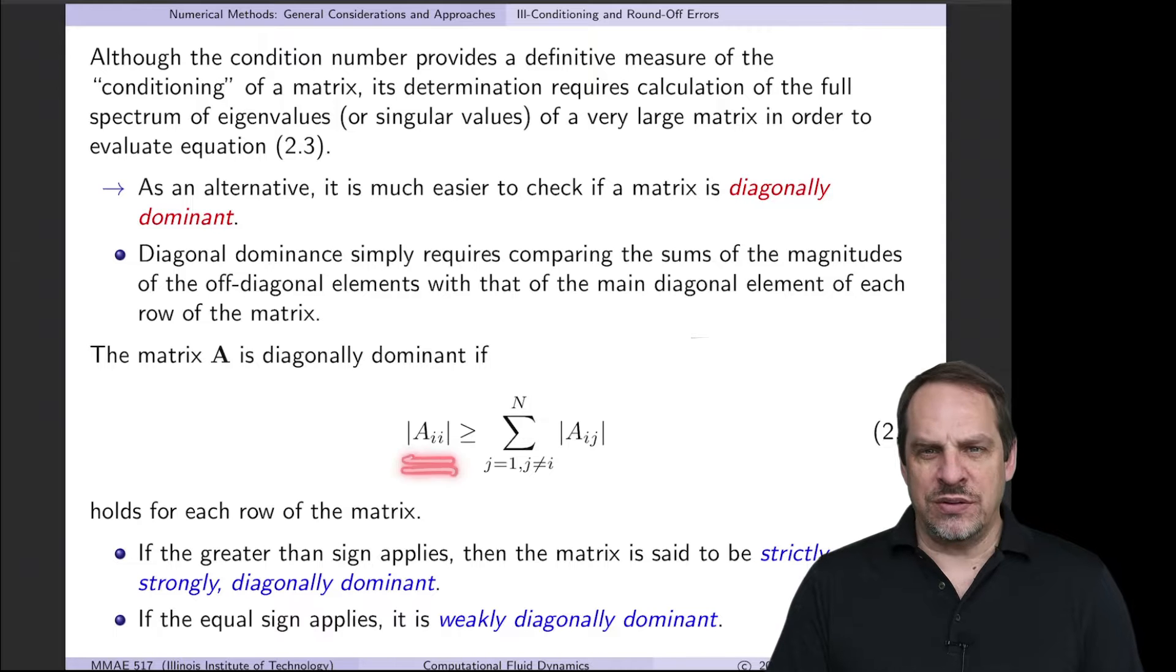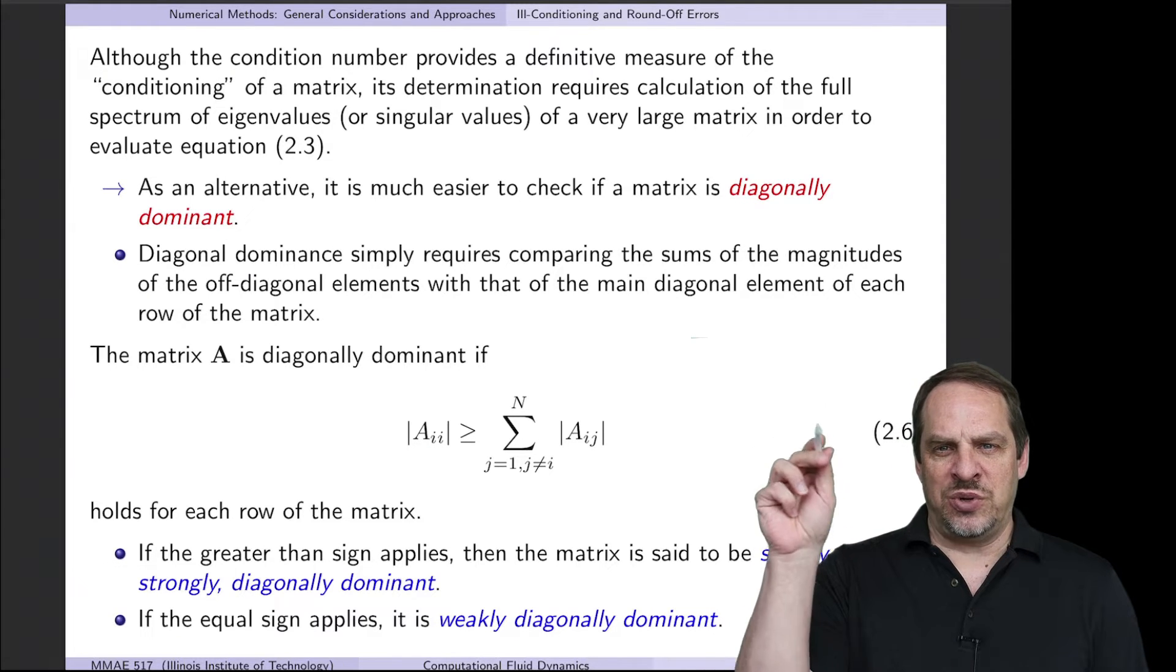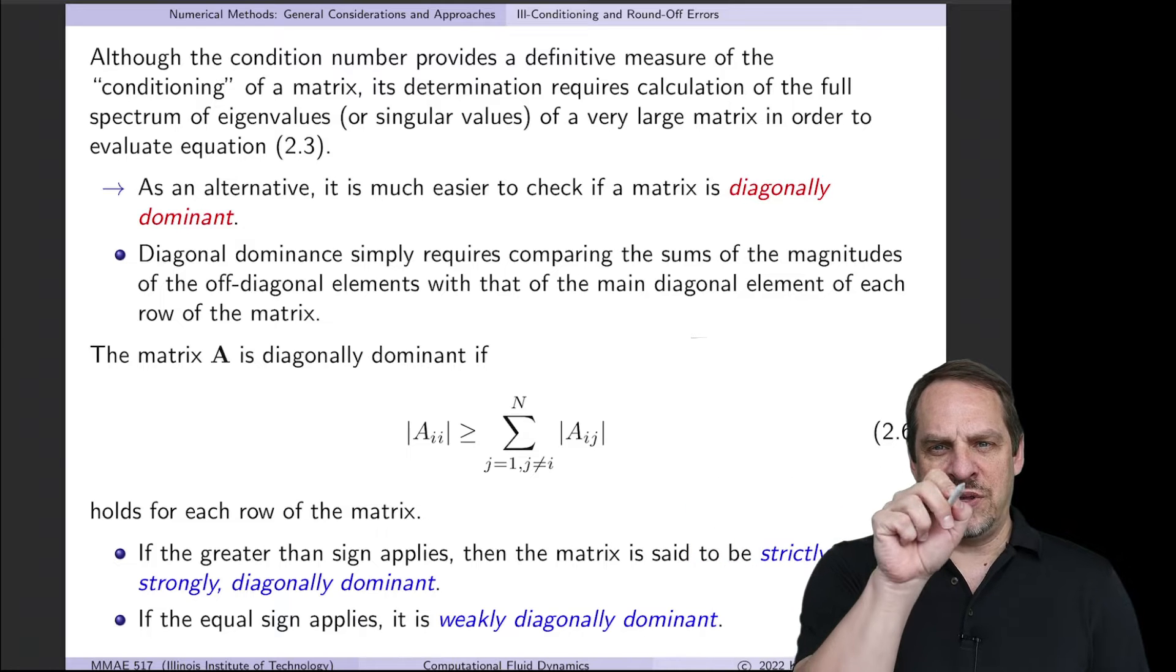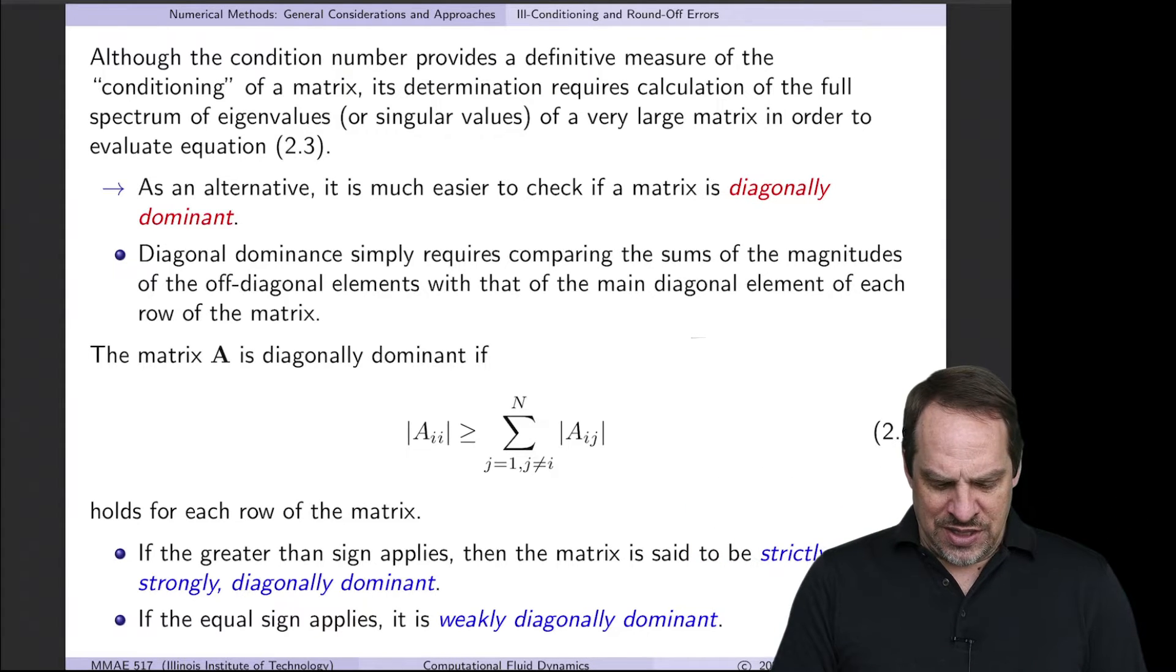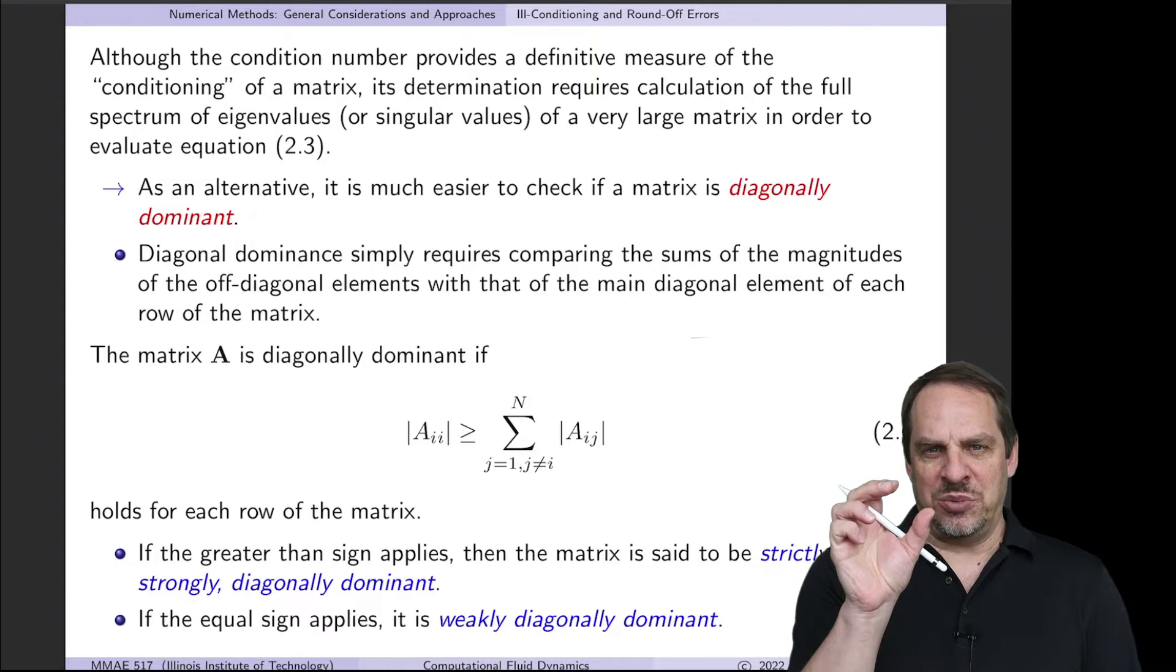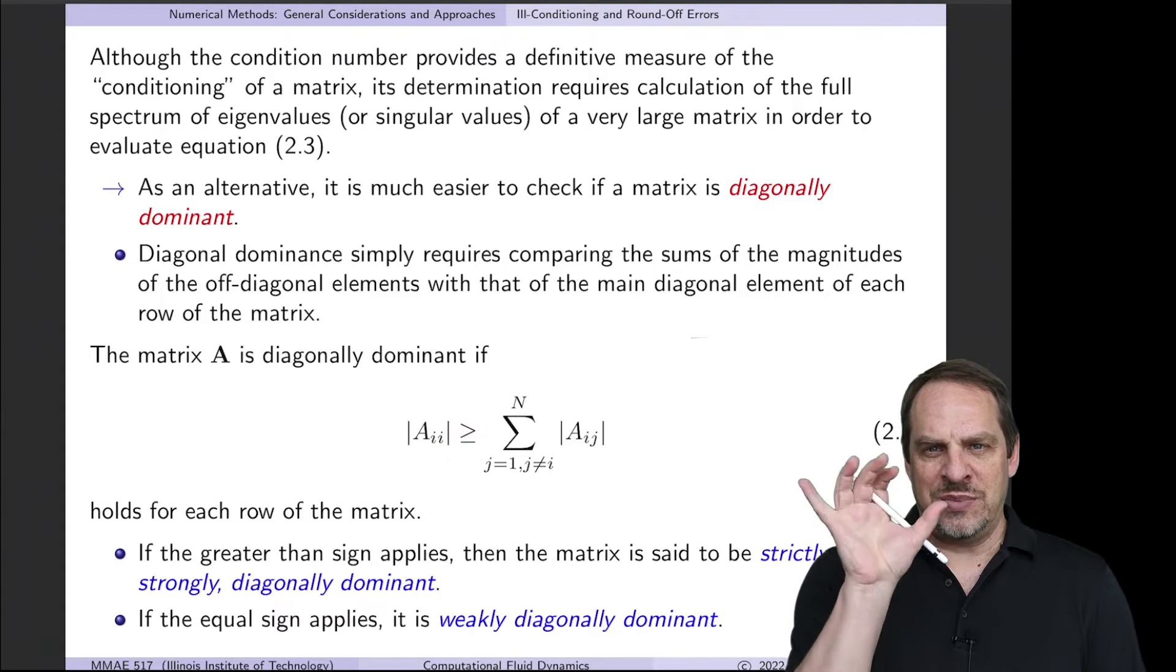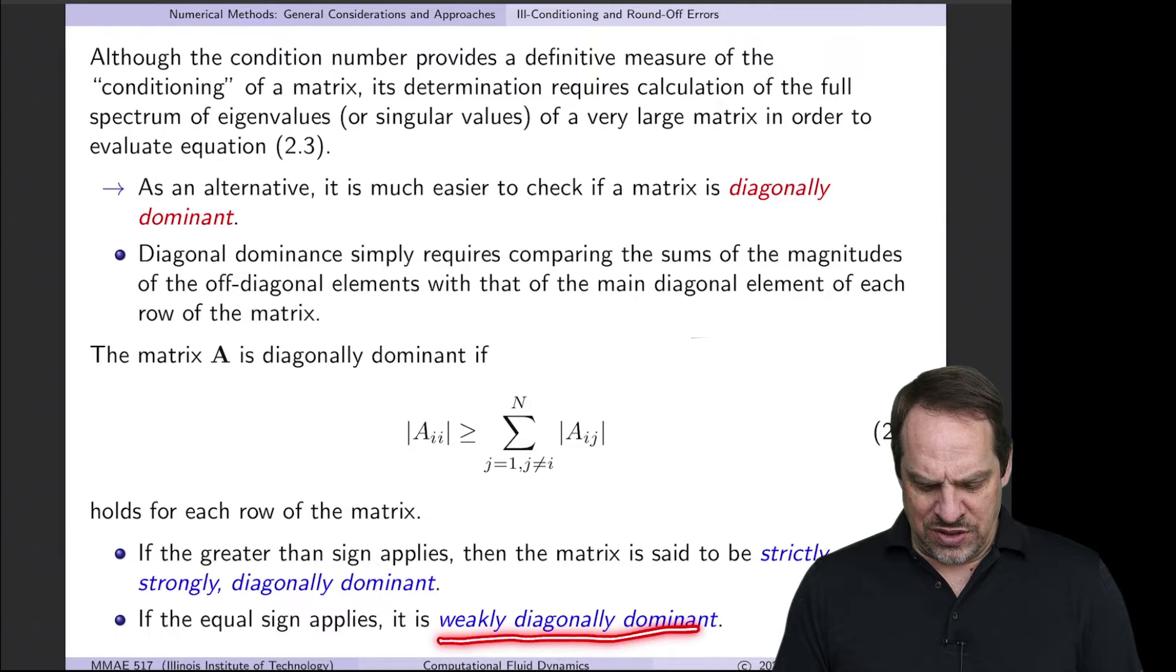Here's the test. So |Aii| magnitudes, what's absolute value, so that's A11, 22, 33, 44, down the main diagonal of the matrix. That has to be at least as large as the sum of all the off-diagonal elements in that row. So all the other elements, other than the main diagonal element, sum up their magnitudes, and that has to be no greater than that of the main diagonal element. If it's a greater than sign, so if the main diagonal element is larger than the sum of the magnitudes of the others, then we say that it is strictly or strongly diagonally dominant. If the equal sign applies, so it's the same as that sum, then we say it's weakly diagonally dominant.